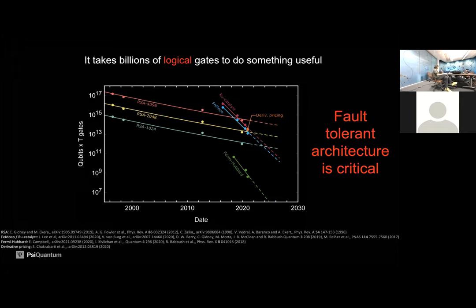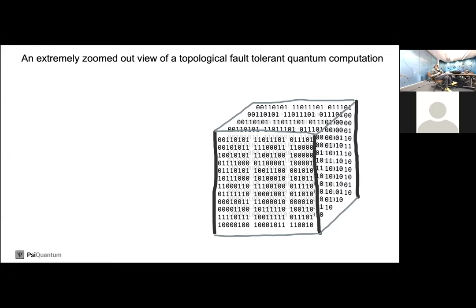To explain why we focus on fault-tolerant architecture: here are some of the best known resource counts for running non-trivial algorithms — RSA, solving optimization problems, or the Fermi-Hubbard model. What you can see is that it's going to take billions of logical gates to do anything non-trivial, so you need to suppress your error rate down to order 10⁻¹⁰ at least. There's no way to build qubits that are that robust, which is why we focus so much on fault-tolerant architecture.